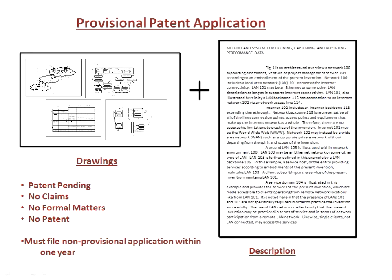To take advantage of the filing date, a non-provisional patent application must be filed within one year, and even then the earlier filing date is only effective for exactly what was described in the provisional application.